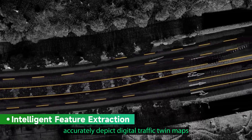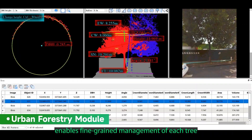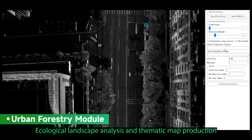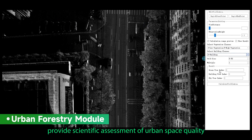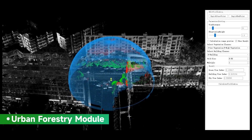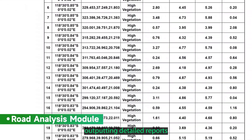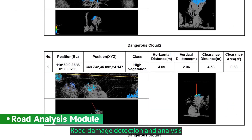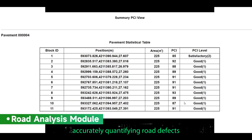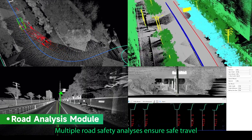One-click automatic extraction of road surface and facility features to accurately depict digital traffic twin maps. Urban forestry survey enables fine-grain management of each tree. Ecological landscape analysis and thematic map production provide scientific assessment of urban space quality. Urban power distribution line digitization and analysis outputting detailed reports. Road damage detection and analysis accurately quantifying road defects, with multiple road safety analyses to ensure safe travel.